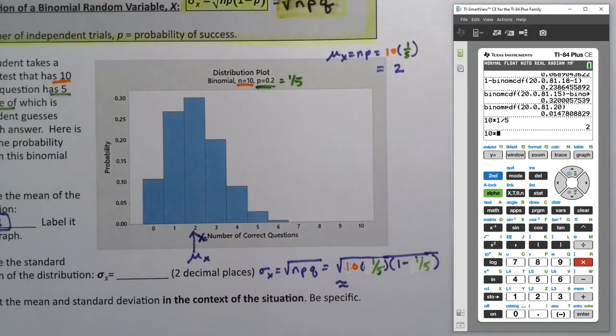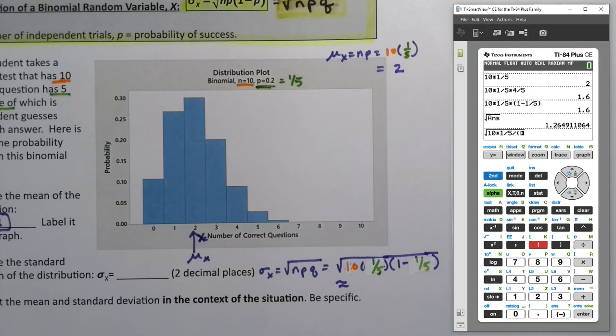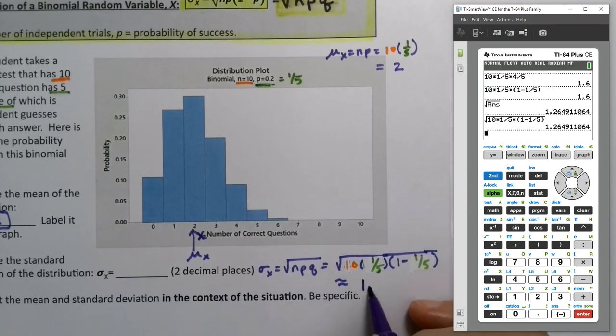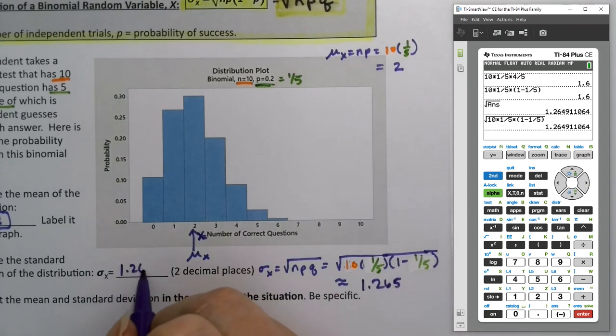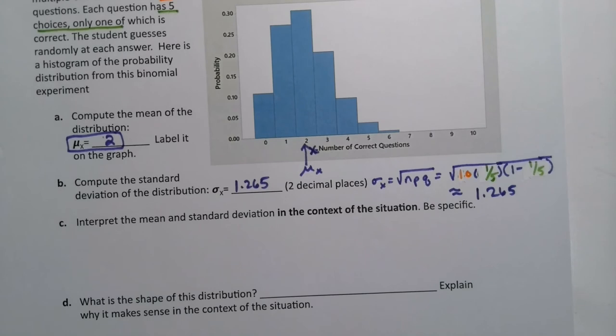So 10 times one-fifth times four-fifths, which is what 1 minus one-fifth would be. You can type it as 10 times one-fifth times, in parentheses, 1 minus one-fifth, and then take the square root of it. That gives us 1.265, roughly. And any graphing calculator will do; we'd almost always use this TI-84 or StatCrunch.